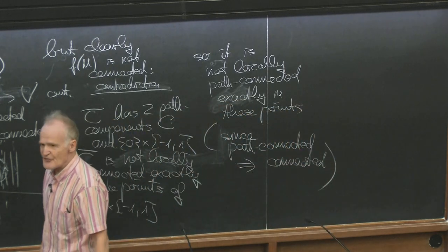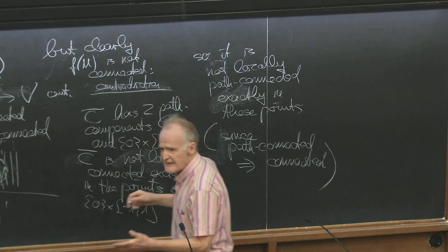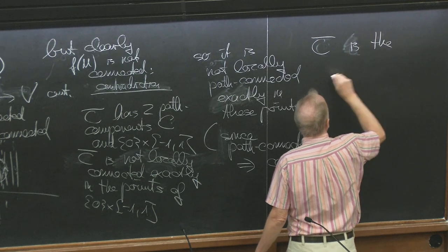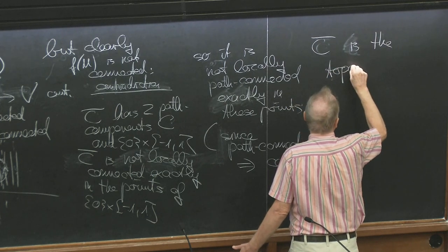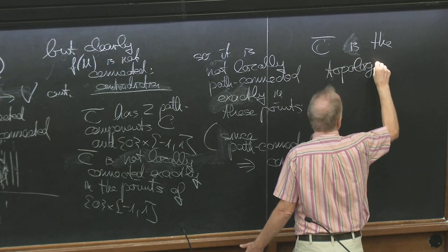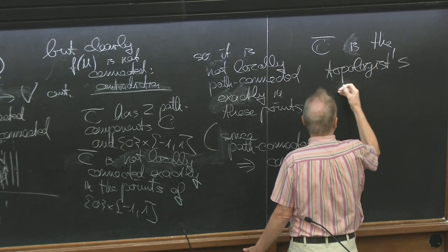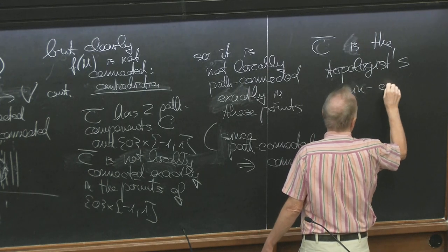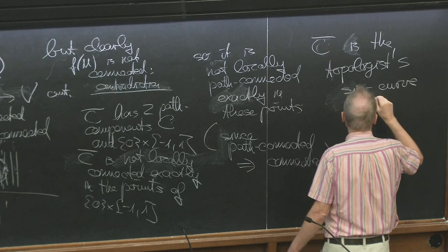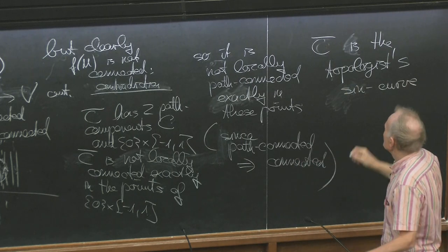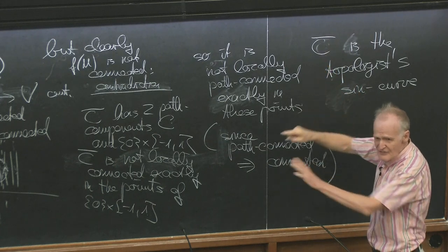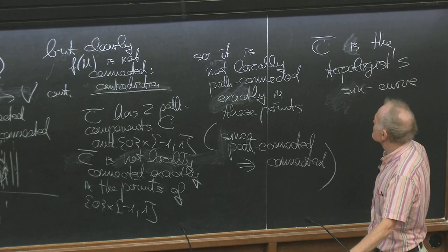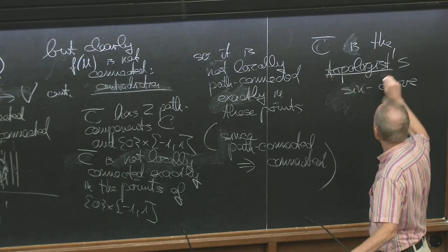So this is an example — it is called the topologist's sine curve sometimes in the book. C-bar is the topologist's sine curve. It's a graph of sin(1/x). C-bar is the interesting one — C is also okay, but C-bar is the topologist's sine curve.